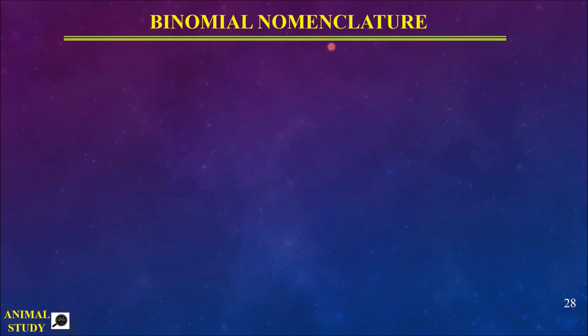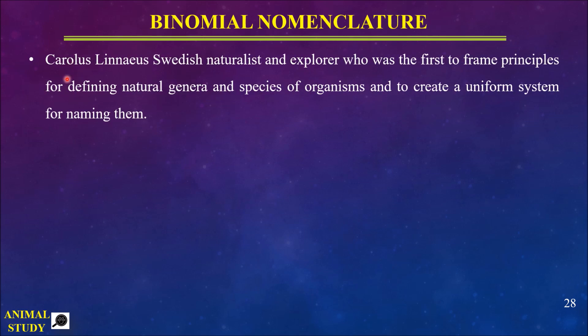So let's start. What is binomial nomenclature? The word 'bi' means two, 'nomial' means name, and 'nomenclature' means naming system. So binomial nomenclature is a naming system in which an organism is given a name consisting of two terms. For example, we studied the human name 'Homo sapiens' — two terms. Binomial nomenclature was started by Carolus Linnaeus, also known as Carl Linnaeus, who was the father of taxonomy. He arranged all genera and species of organisms into one complete uniform system.